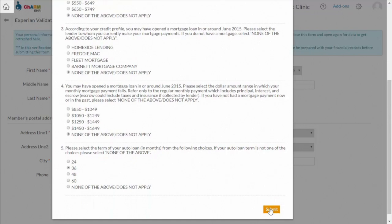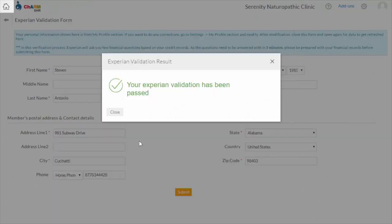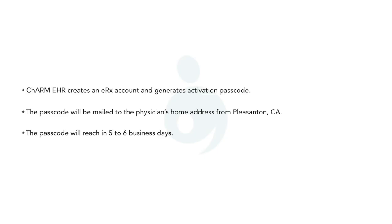After successful Experian verification, Charm will create an ERX account for you in ShortScripts and send you a passcode to your mailing address. This mail is sent from Pleasanton, California, and it takes about 5 to 6 business days to reach you.